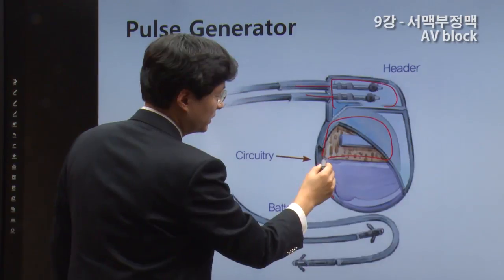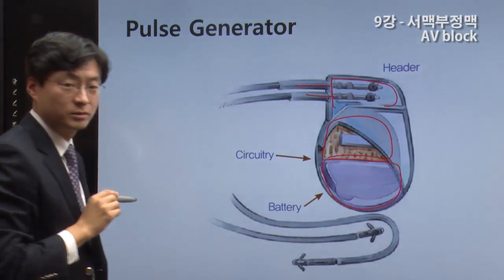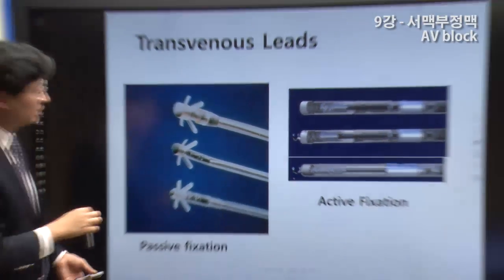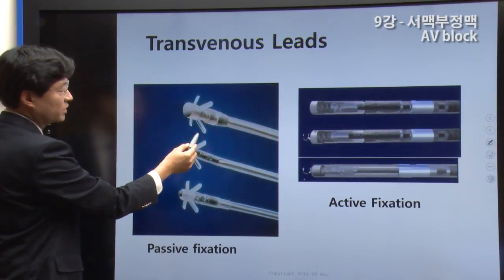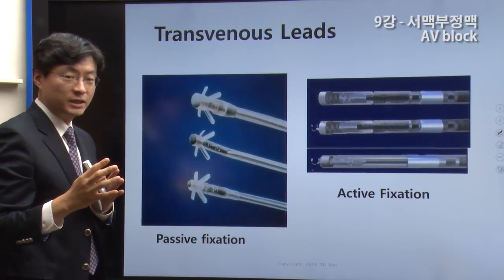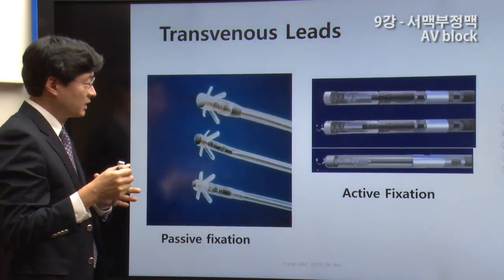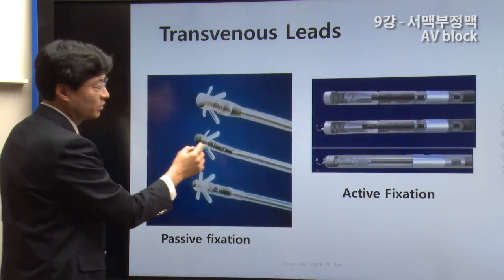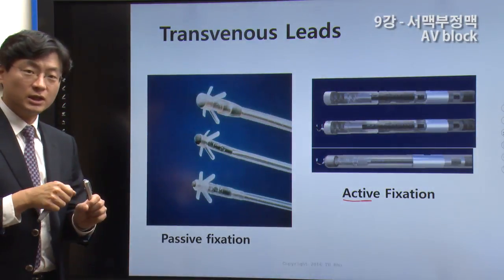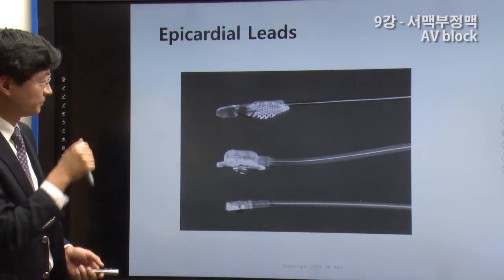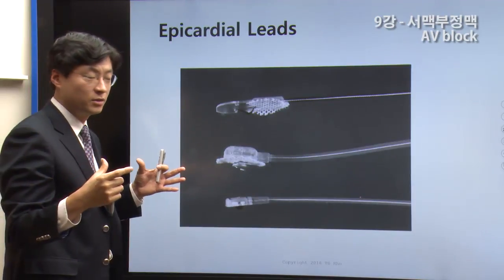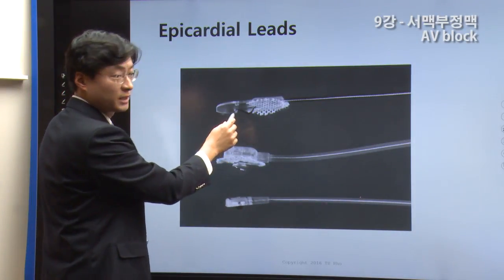If the power connects to the battery, it consists of three parts. The lead has two types: the passive fixation, which is like a tine at the end, and the active fixation, where a screw comes out so it can be fixed inside the heart — placed into the inner cardiac structures.